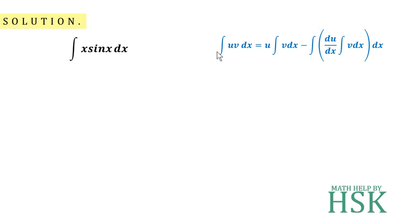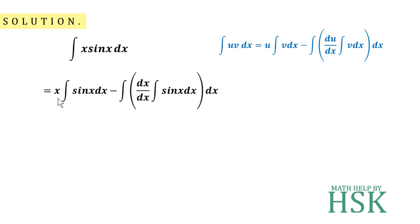So for integration of x·sin(x), we assume u = x as the first function and v = sin(x) as the second function. Applying the formula, we get: x into integration of sin(x), minus the integration of the product of differentiation of u into integration of v — that is, d/dx of x into integration of sin(x).